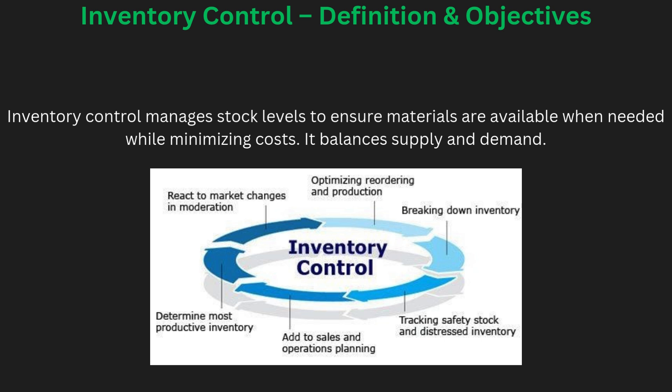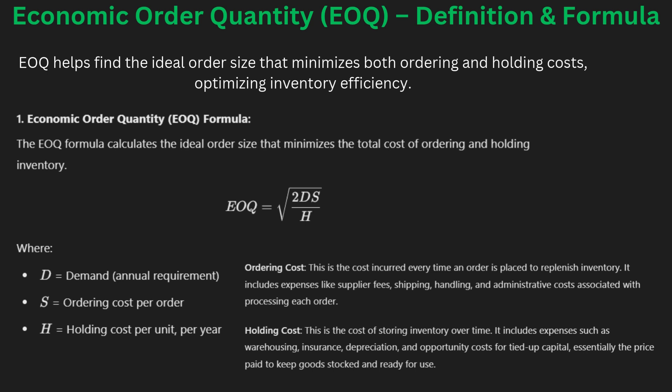The Economic Order Quantity (EOQ) is the ideal order quantity that minimizes the total cost of ordering and storing inventory — that is, the ordering cost and the holding cost. The EOQ formula calculates the optimal order size by balancing these two costs. You can see the definitions on screen, including what ordering cost and holding cost mean.